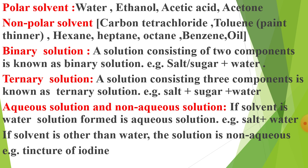Then, ternary solution — as the name indicates, ternary means three components. Quaternary may have four components. A ternary solution may be defined as a solution consisting of three components, known as ternary solution. The most common example we use in our homes is salt plus sugar plus water.